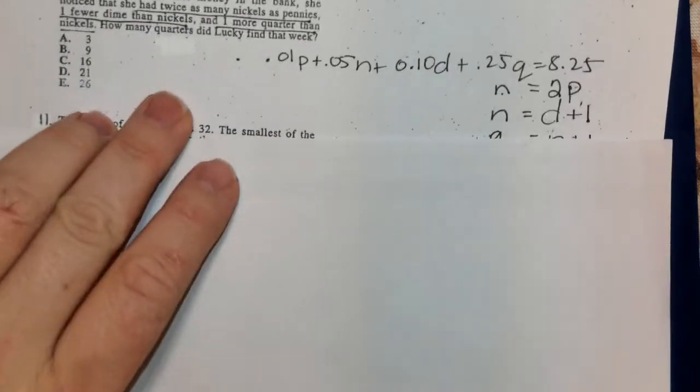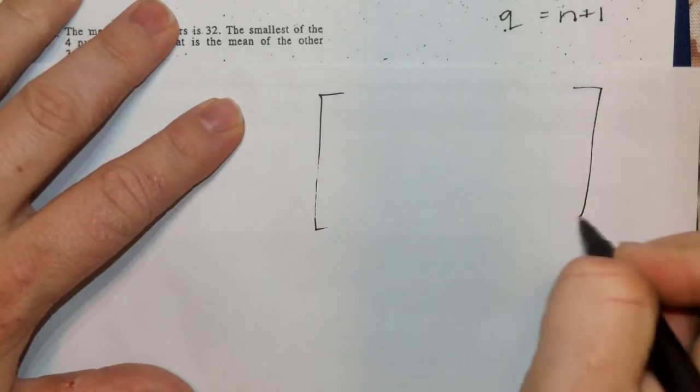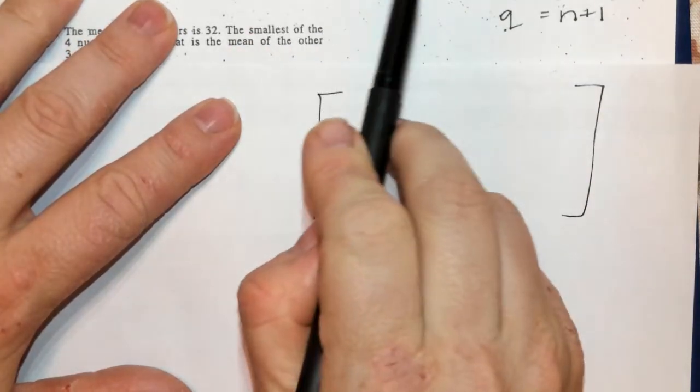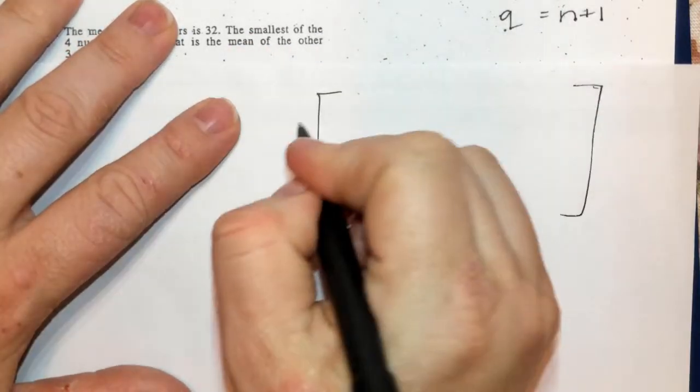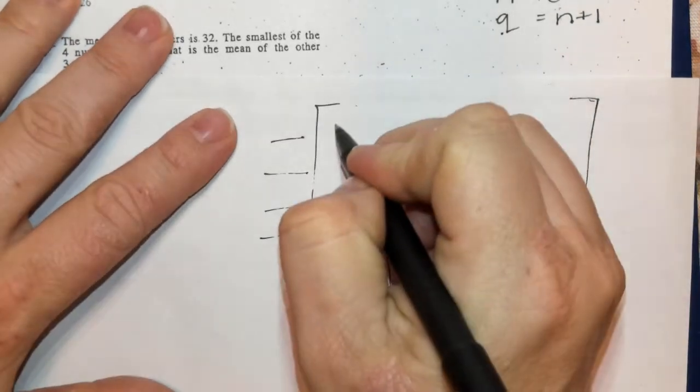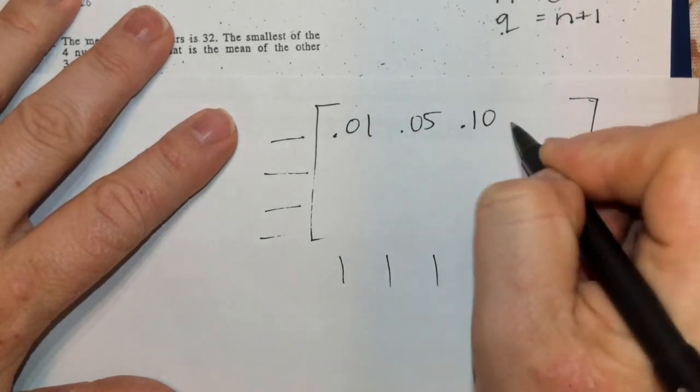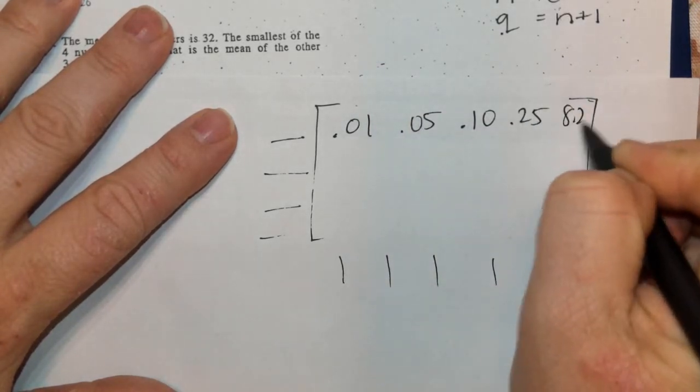Let's put this into a matrix. The dimensions are 4 rows by 5 columns: pennies, nickels, dimes, quarters, and money. The first row is: 0.01, 0.05, 0.10, 0.25, and 8.25.